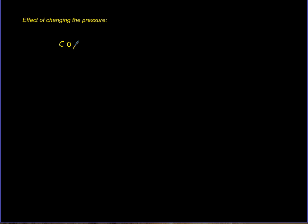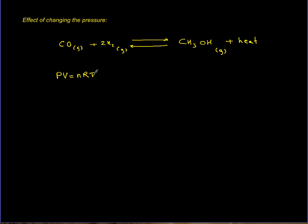Let's look at the effect of pressure. The reaction is carbon monoxide plus hydrogen giving methanol, and we established it's exothermic with heat of 202 kilojoules per mole. Pressure only applies to gases. If the gases are ideal, they obey this law. Whether real or ideal, they follow this principle: if temperature is constant and number of moles of gas is constant, then PV equals a constant, so pressure and volume are inversely proportional.